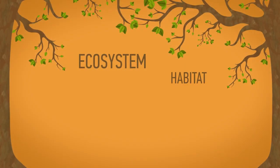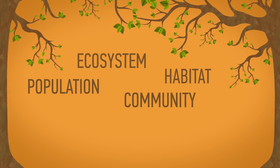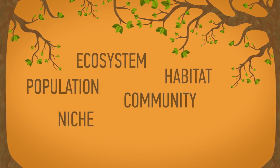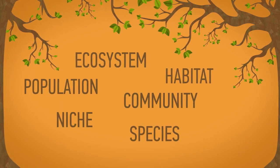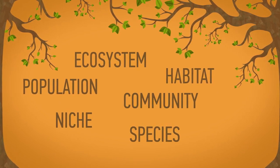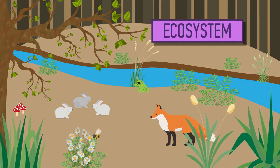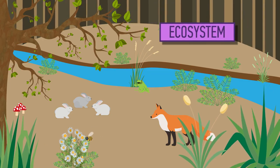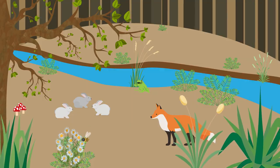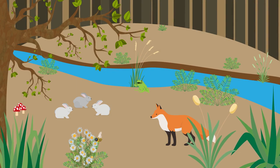In this video we are going to look at a few key words that you will come across throughout ecology. Let's start by looking at the whole thing — the ecosystem. An ecosystem is made up of all the communities that live in it, every single organism from big to small, and lots of environmental factors like sunlight,